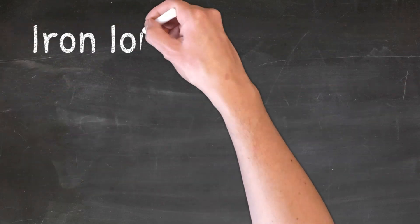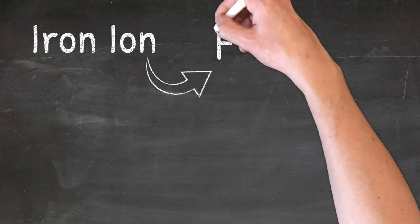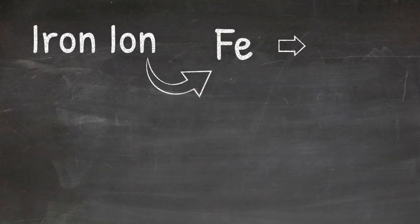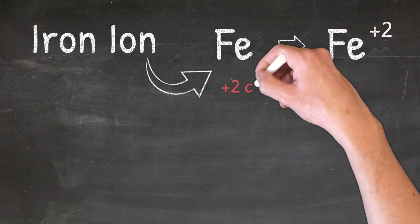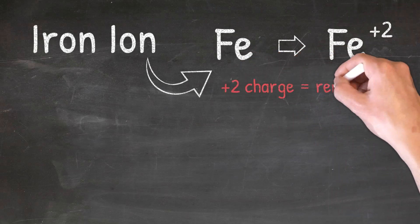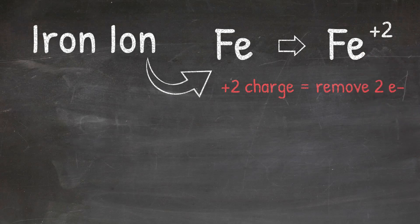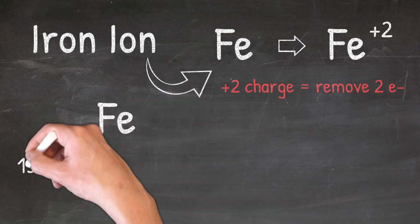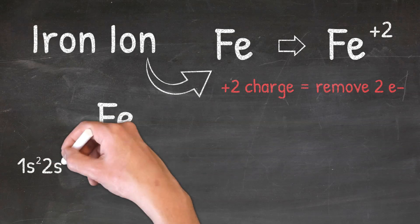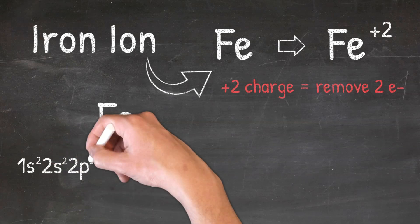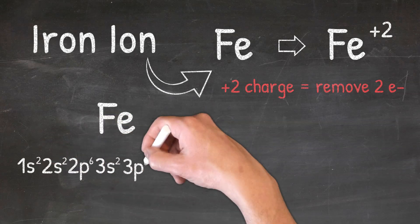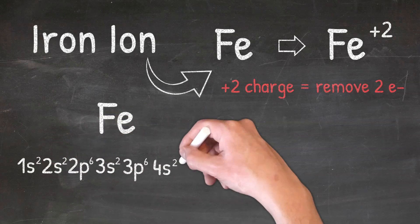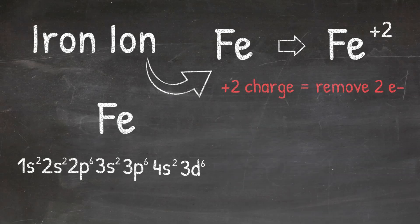In our next example we're going to look at the iron ion with a plus two charge. The plus two charge tells us that two electrons are removed. So I'll start by writing the electron configuration for the iron atom: 1s2, 2s2, 2p6, 3s2, 3p6, 4s2, 3d6.